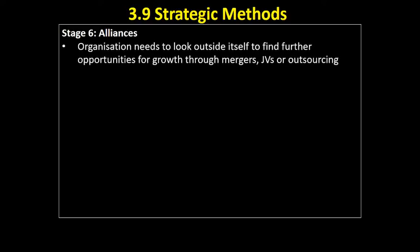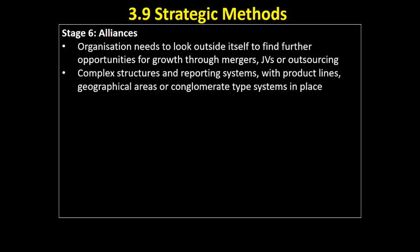The growth crisis means we can no longer grow internally, so we move on to stage six: creating alliances, which leads to an identity crisis. We're looking outside ourselves for future growth opportunities — maybe through mergers and takeovers, joint ventures where two businesses work together on a particular project, or outsourcing production or functions like IT or marketing. This leads to complex structures and reporting systems across different product lines and geographical areas.